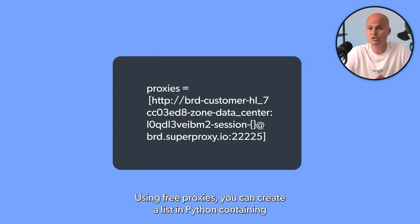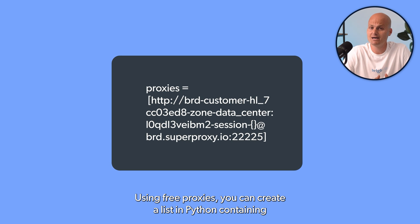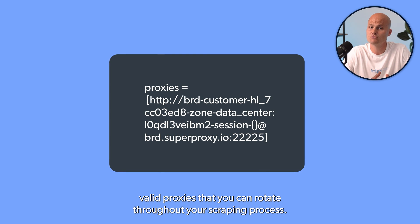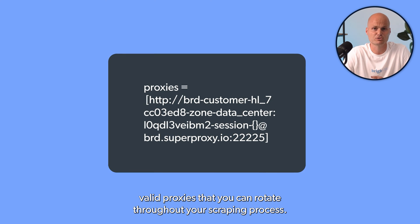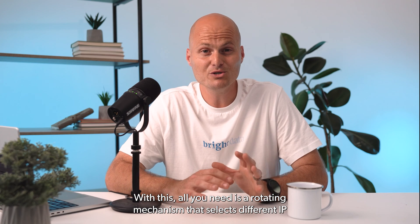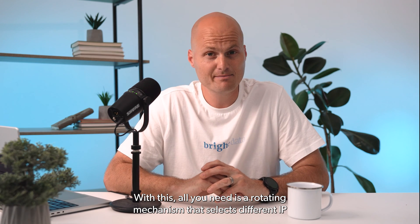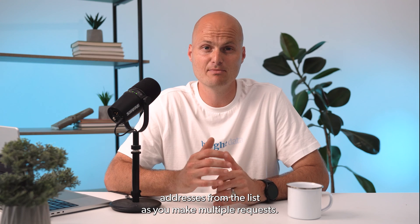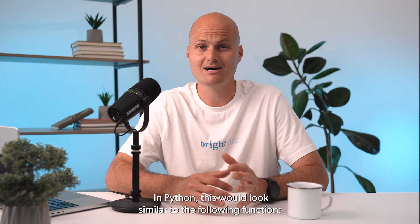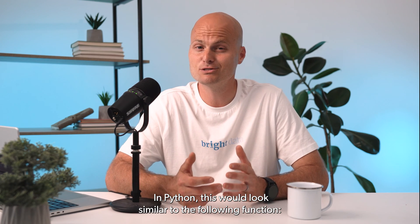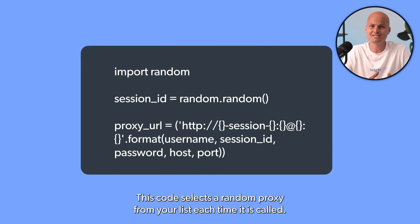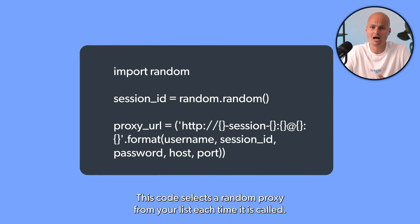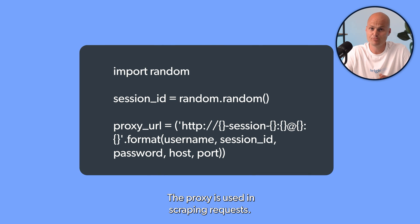Using free proxies, you can create a list in Python containing valid proxies that you can rotate throughout your scraping process. All you need is a rotating mechanism that selects different IP addresses from the list as you make multiple requests. In Python, this would look similar to the following function. This code selects a random proxy from your list each time it is called, and the proxy is used in scraping requests.